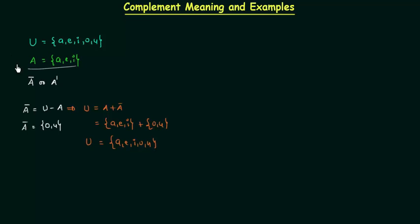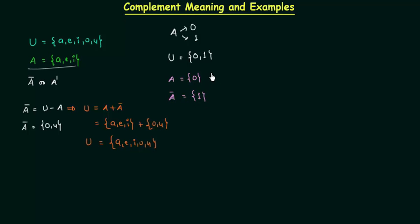If I talk about Boolean algebra, the variable can have only two values: 0 or 1. This is something we already know, and because of this the universal set has only two elements: 0 and 1. If we take a set having element 0 and take its complement, it will have element 1. Similarly, set B having element 1 gives B-complement with element 0. So complement of 0 is 1 and complement of 1 is 0.